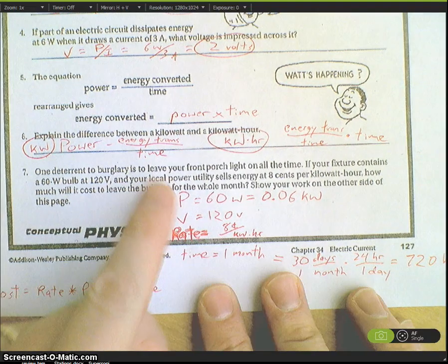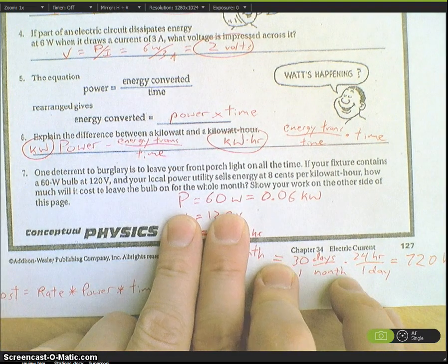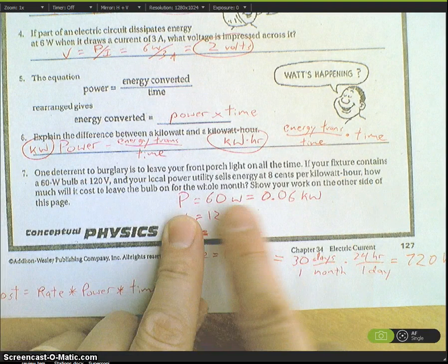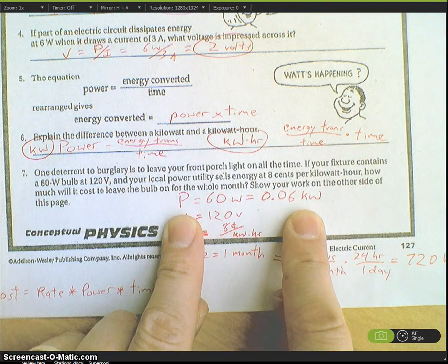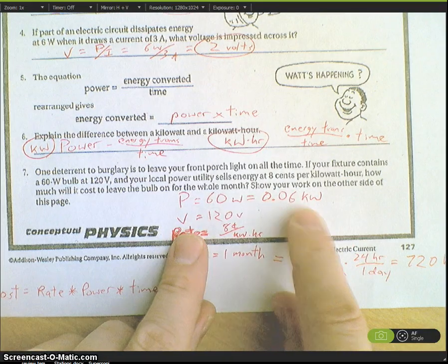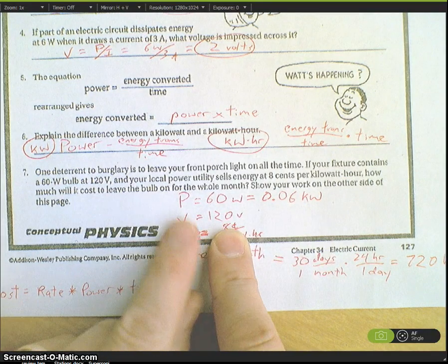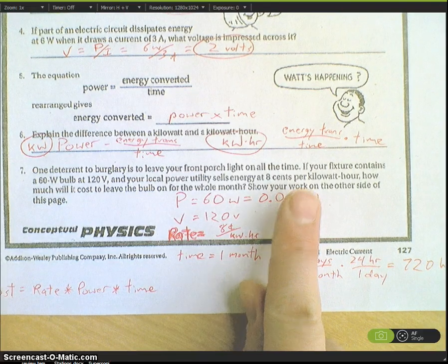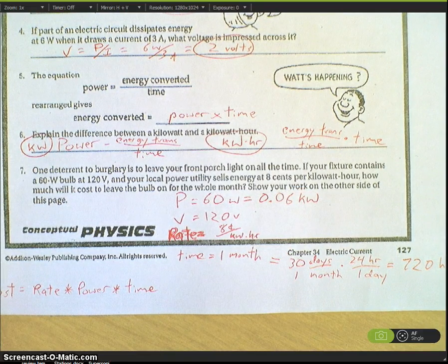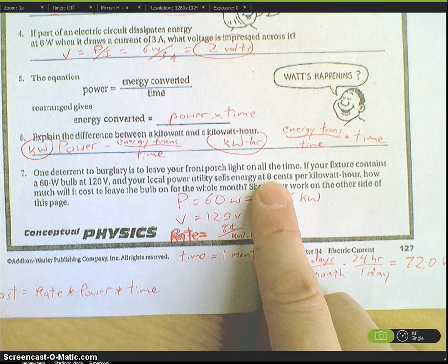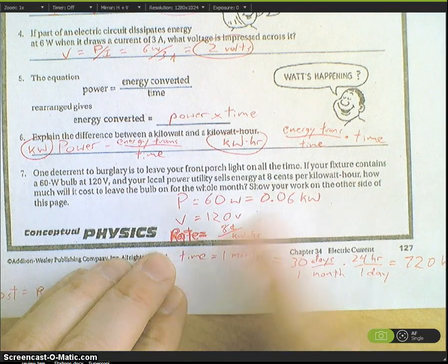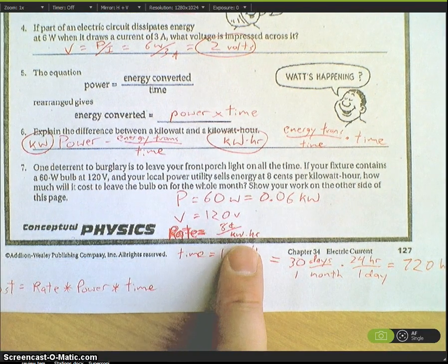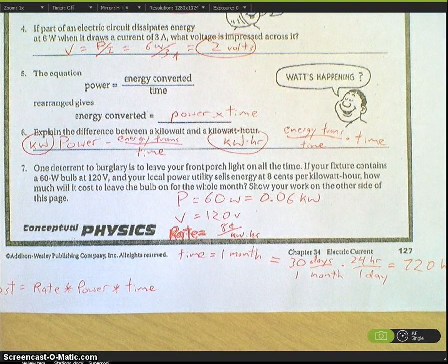Being the good physics student I am, I list out my variables. Power is 60 watts. I noticed there's a kilowatt in here, so I converted that to 0.06 kilowatts. Voltage is 120 volts. Then it gives us this cost: 8 cents per kilowatt hour. Anytime you see the word 'per,' that's a rate. So the rate equals 8 cents per kilowatt hour.